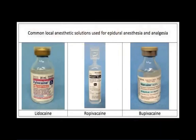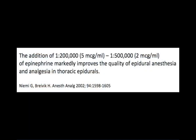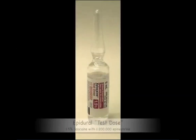Common local anesthetic medications used for epidural anesthesia include ropivacaine, lidocaine, and bupivacaine. The addition of a small amount of epinephrine to the local anesthetic has been shown to improve the quality of epidural anesthesia for thoracic epidurals. A 3 ml test dose of 1.5% lidocaine with epinephrine can be used to test the placement of the epidural catheter. A dense and rapid motor block would suggest the catheter is in the intrathecal CSF space and not the epidural space. A rapid increase in heart rate following the test dose would suggest the epidural catheter tip has inadvertently entered a vein.